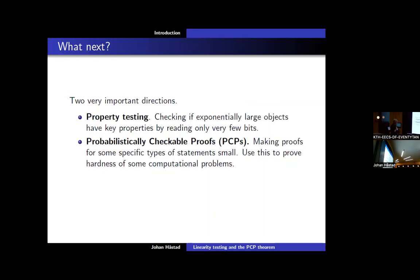As computer science this took off in two very important directions. One is property testing: I give you an exponentially large table, an exponentially large graph, or something, and I ask does this object have some property — like being linear, being a bipartite graph, being connected — and you're supposed to answer by reading only a constant-size portion. The other direction is probabilistically checkable proofs: thinking about what kind of proofs we can get, much smaller proofs that say something interesting about approximability.